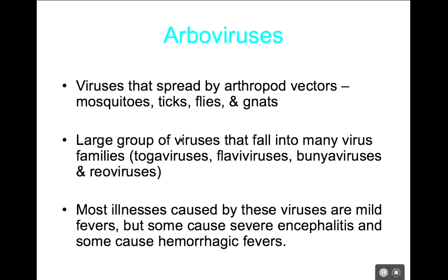The arboviruses are used to describe viruses spread by arthropod vectors. Any virus spread via mosquitoes, ticks, flies, gnats, etc. would be called an arbovirus — that's what the term means. This is a large group of viruses that fall into many different families. Arbovirus is not a family — they're grouped together simply because they're spread through an arthropod vector. We can see really clear patterns with arboviruses.